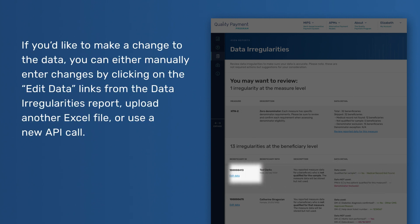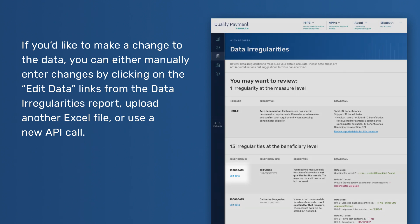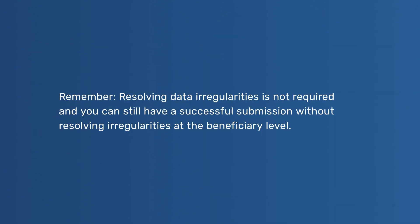If you'd like to make a change to the data, you can either manually enter changes by clicking on the Edit Data links from the Data Irregularities report, upload another Excel file, or use a new API call. Remember, resolving data irregularities is not required, and you can still have a successful submission without resolving irregularities at the beneficiary level.